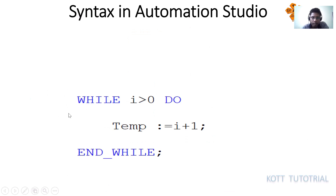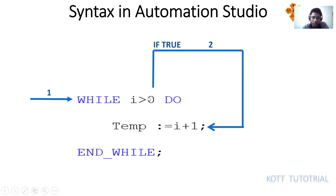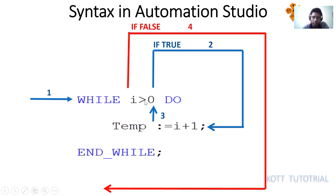This is the syntax of while loop in Automation Studio. During the execution, i greater than or equal to 0 is the condition. If this condition is true, it would be executing the statement temp is equal to i plus 1. And after execution of the statement, it will again check for the condition. If the condition is still true, it would again execute temp is equal to i plus 1. This loop is going to continue unless the condition is false, and once the condition is false, it would be exiting out of the loop.